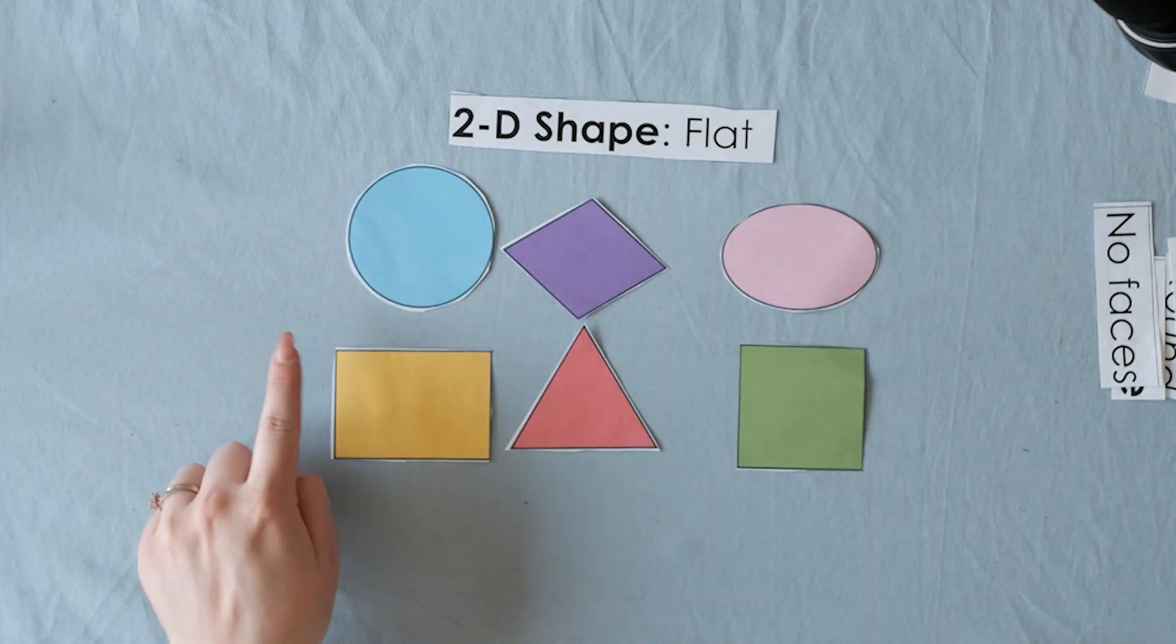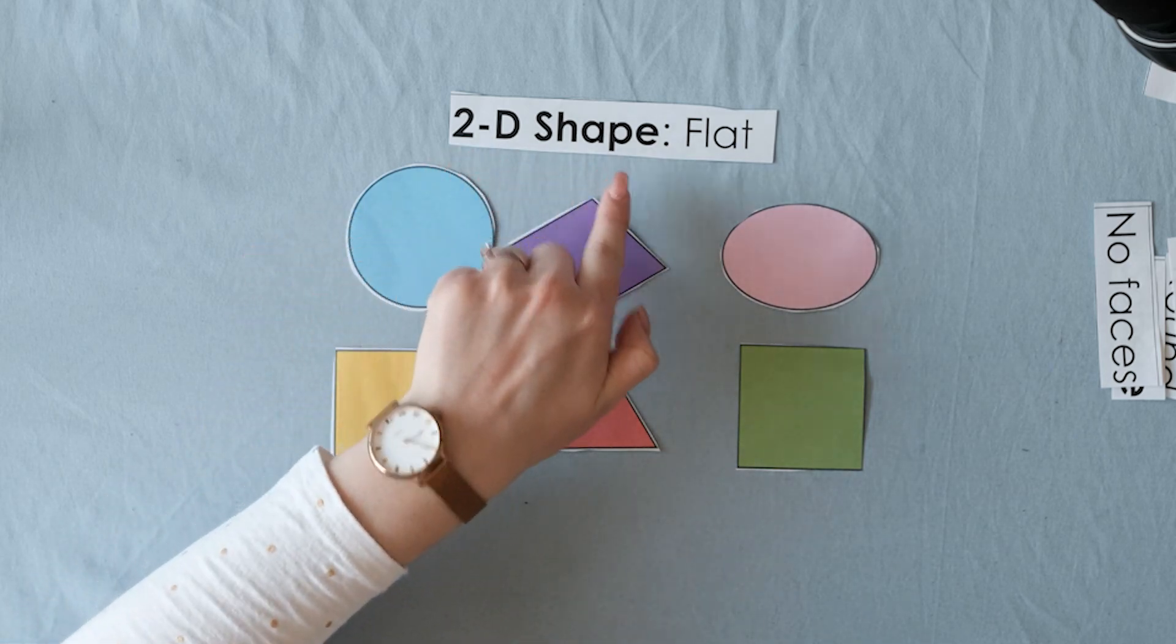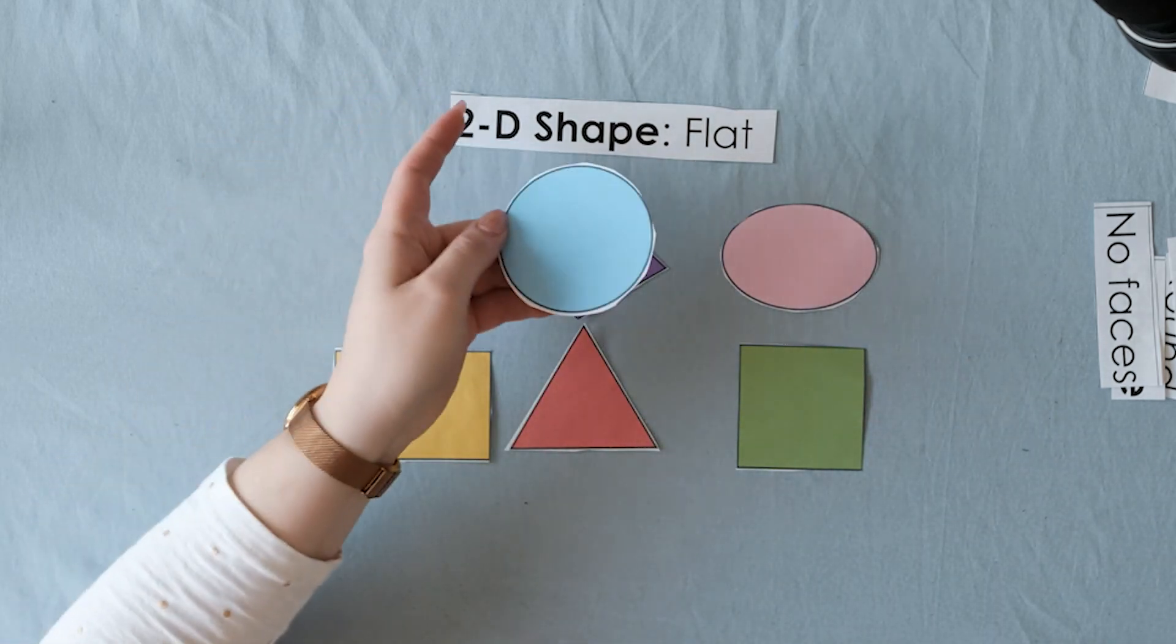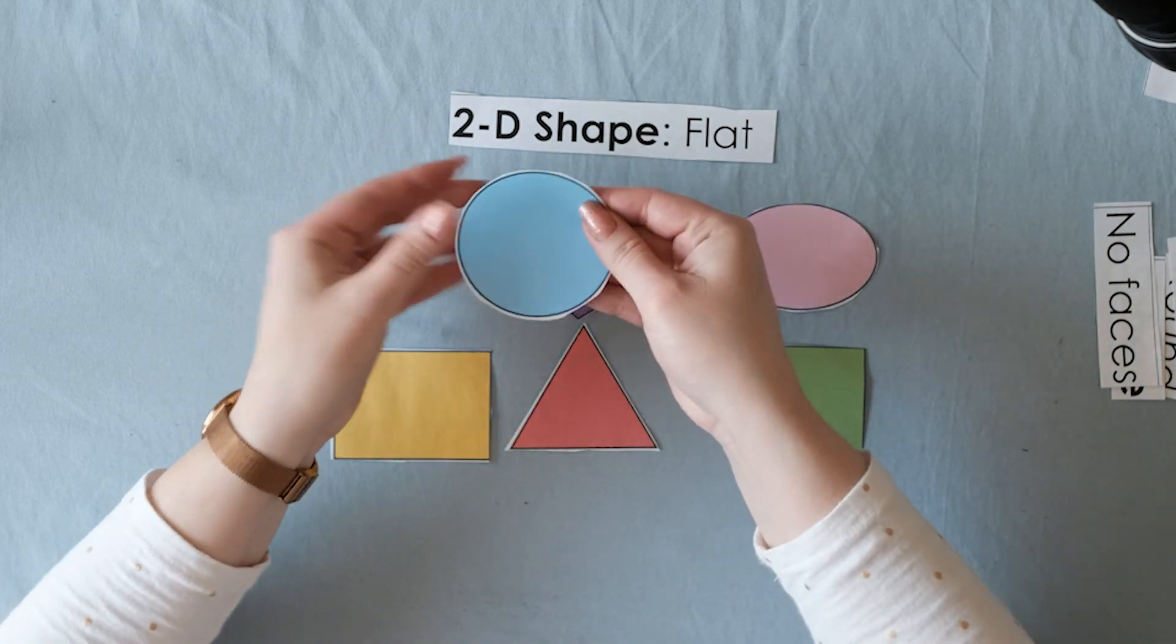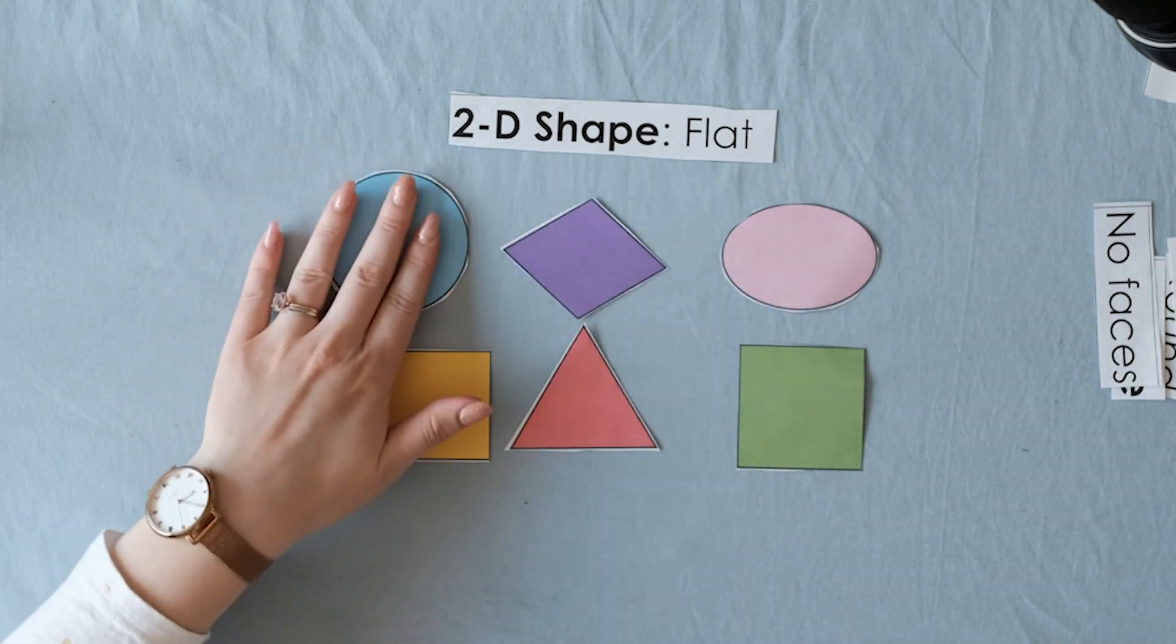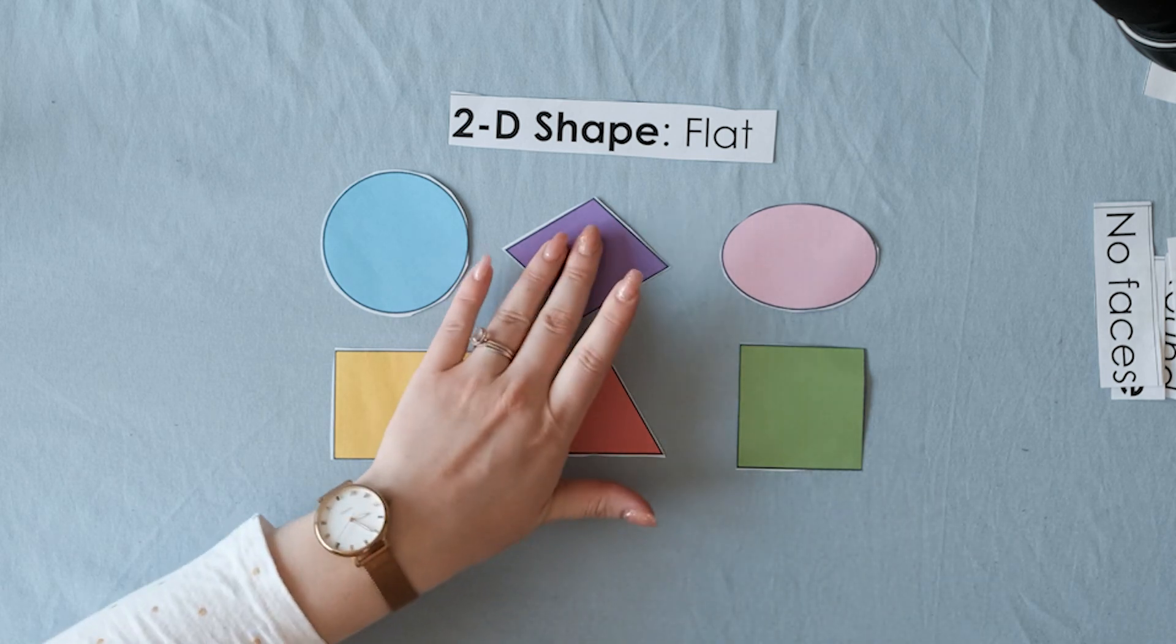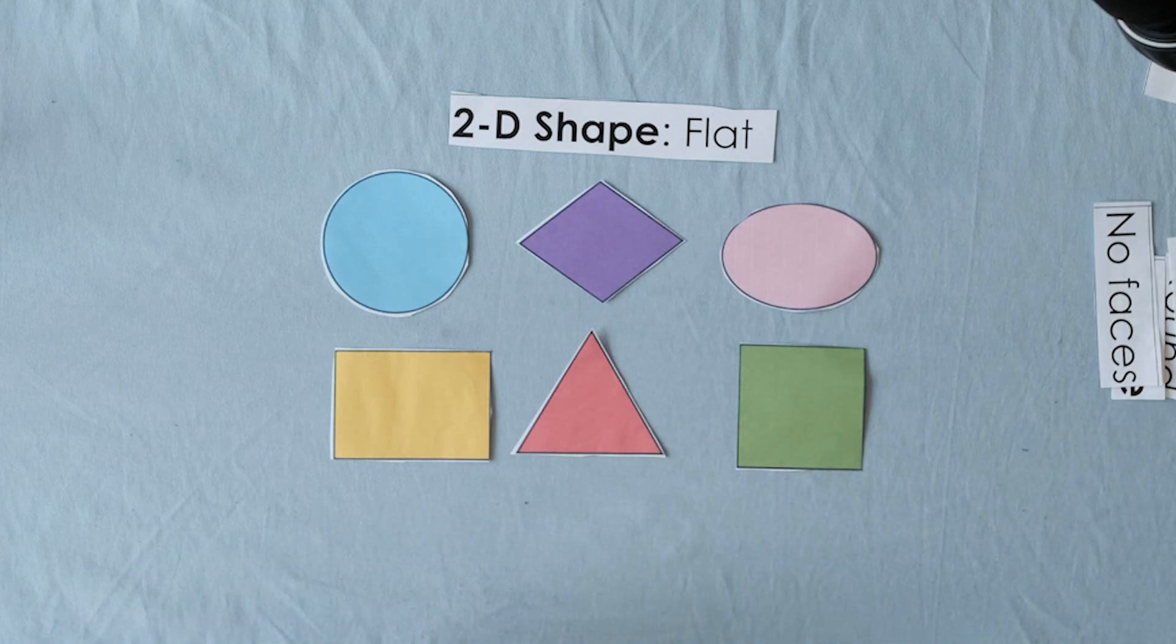So these shapes here are called 2-D shapes and they are flat. If we pick them up you can see it's flat, like a piece of paper. These are the 2-D shapes, the ones you have learned about in kindergarten. So let's go through what they are called. I'm sure that you already know this.